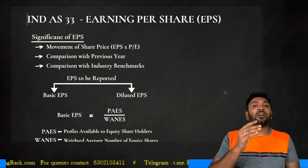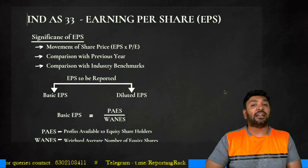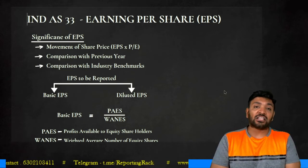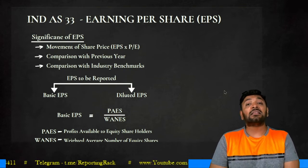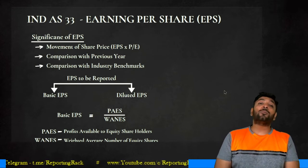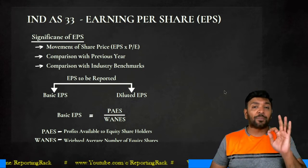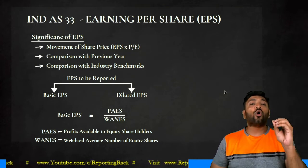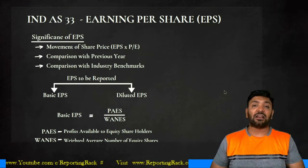If your preference share is cumulative in nature, then preference dividend will be deducted in determination of PAS whether the dividend is declared or not — because for cumulative preference shares, if you don't pay current year's dividend, you will have to pay it in subsequent years. However, if the preference share is non-cumulative, the preference dividend shall be deducted only if the dividend is declared. If not declared, you don't deduct it.